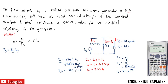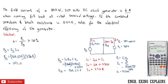We substitute the generated EMF and armature current into the formula to get the generated power. So Pg equals 264.52 volts times 726 amperes. Using the calculator, that equals 192,041.52 watts.